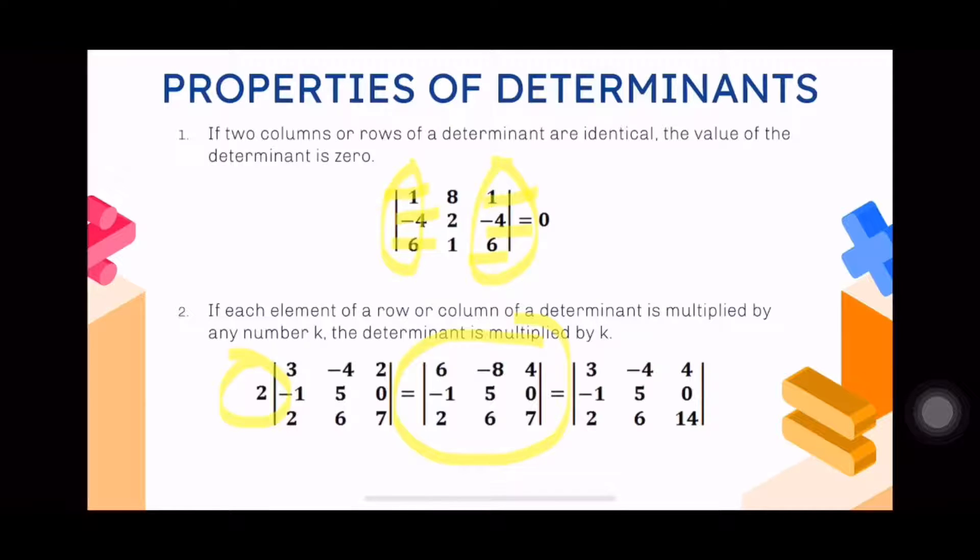When you obtain the determinant of these two, they will have the same answer. We can factor out a common factor, but we factor out from one row or one column only. This is different from matrix scalar multiplication. Remember, in matrices, when we multiply by a scalar, the scalar value multiplies all entries in the matrix. But for determinants, when you distribute a scalar inside a determinant, it multiplies only one row or one column.